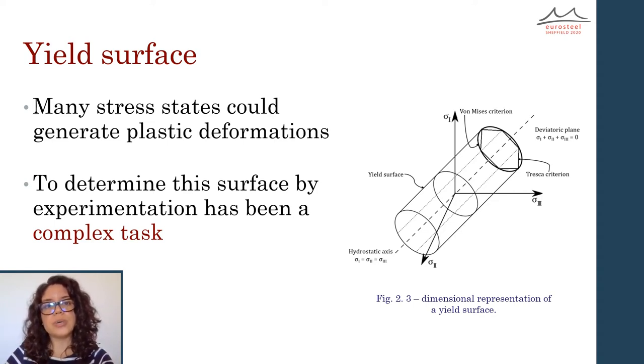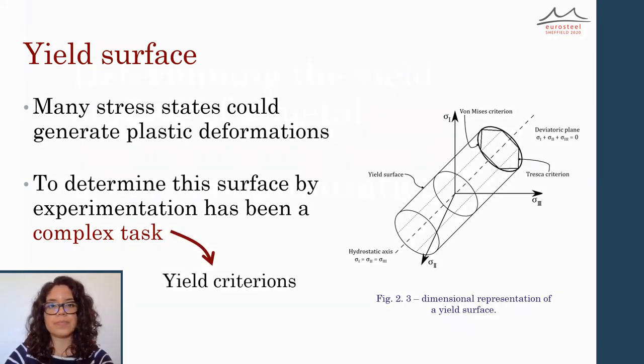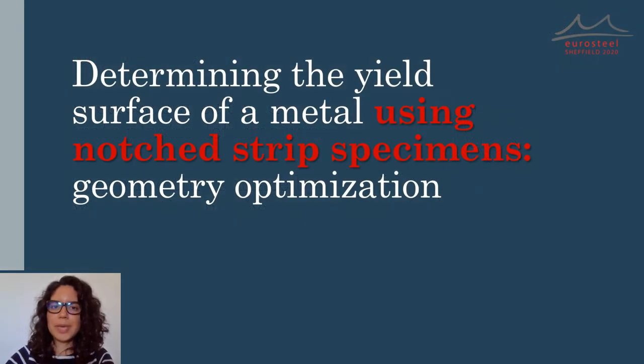Determining this surface by experimental means is quite complex, and this is why we often use yield criterions to approximate it, for example, Tresca or von Mises. Now that we have defined the yield surface, let's talk about the role of the notched strip specimens in the scope of this topic.